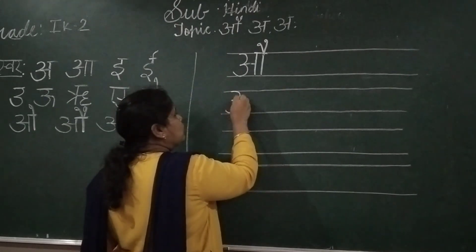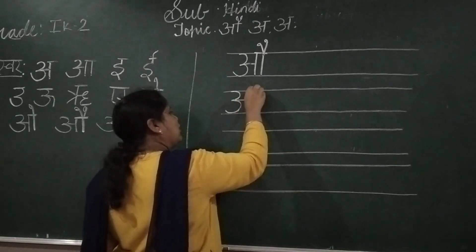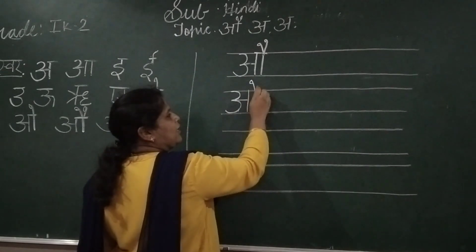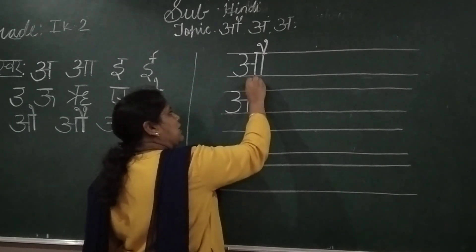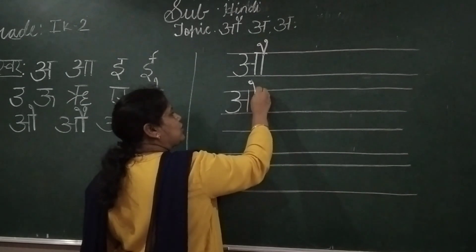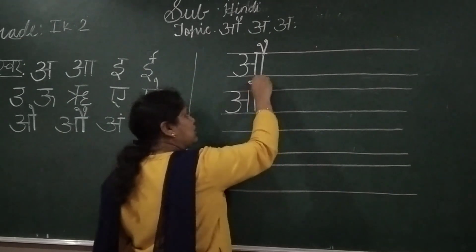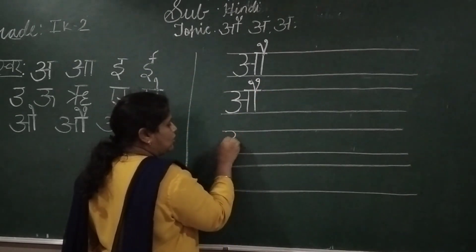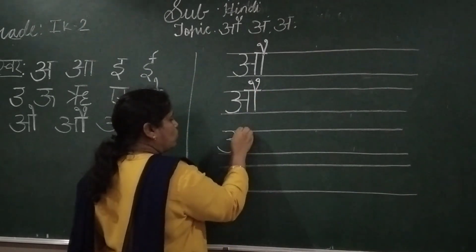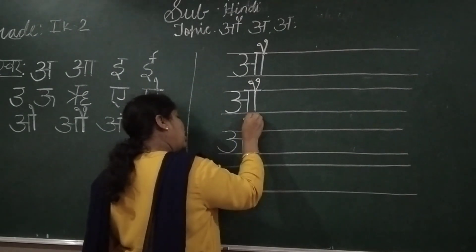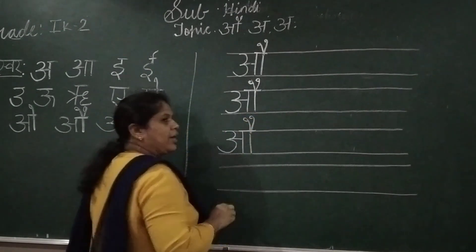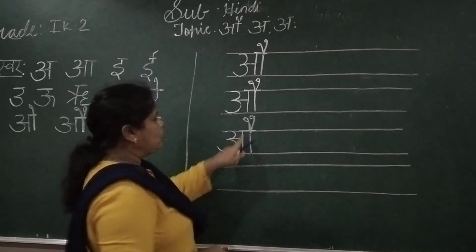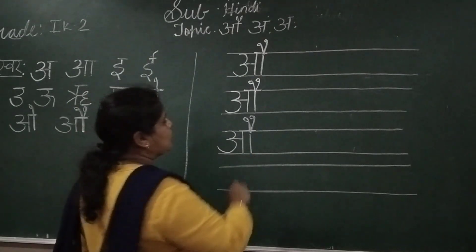Once again — always use the double line. How do you write letter Au? On this second line, one slant line with a small circle, then one more slant line with a small circle around it. This is letter Au. Which letter is this? Au. You have to put these matras on this second line. This is letter Au.